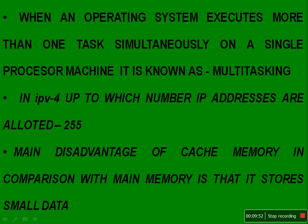When an operating system executes more than one task simultaneously on a multi-processor machine, it is known as multi-processing. But candidates reported the question specified a single-processor machine. When an OS executes more than one task simultaneously on a single-processor machine — underline 'single processor machine' — it is known as multitasking, not multi-processing.